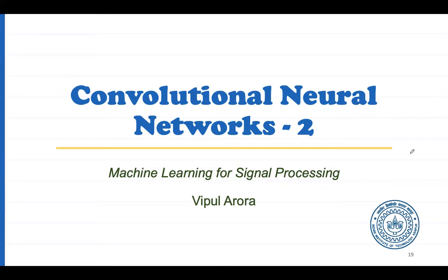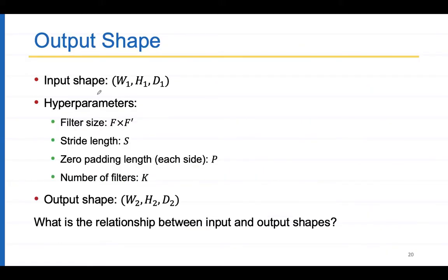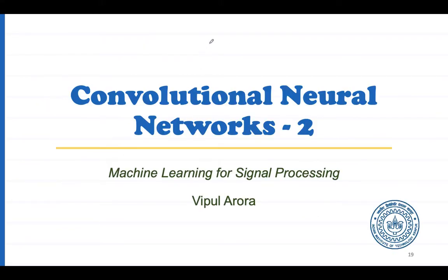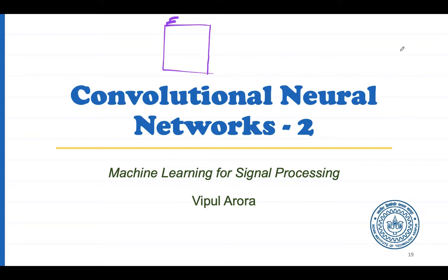In this video, we are going to discuss convolutional neural networks in more detail. A quick recap: what is a CNN? CNN means we have an input which is very high dimensional — it could be an image of size 1000×1000×3 because there are three RGB channels. We try to find local patterns and collate them together to classify or even regress on the input, for example for prediction.